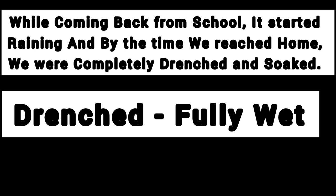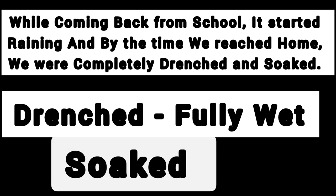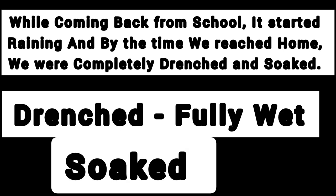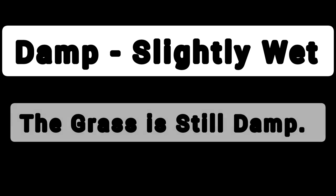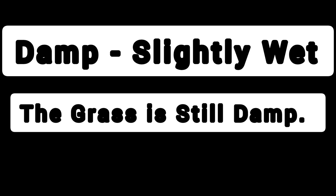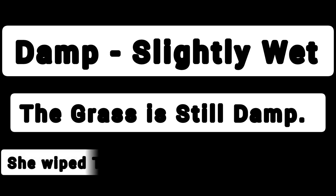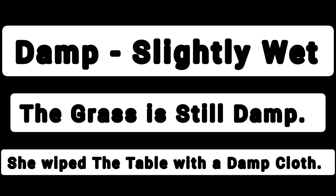Similarly, you can also use the word 'soaked,' which also means fully wet. Drenched and soaked are both used when you are fully wet. But when you are slightly wet — when it's not a lot of wetness — then we use the word 'damp.' Damp is used for slightly wet. For example: 'Last night it rained, but the grass is still damp.' Or for anything that's slightly wet: 'She wiped the table with a damp cloth.'